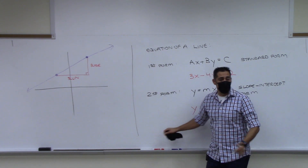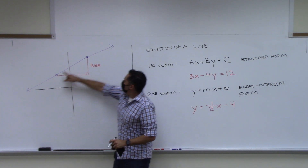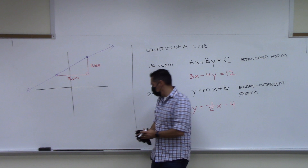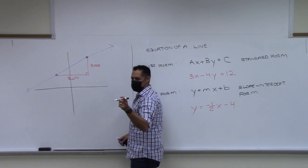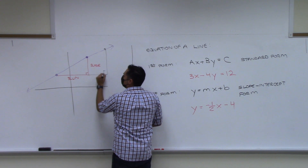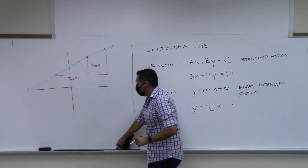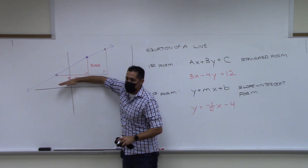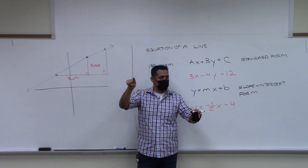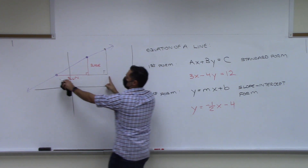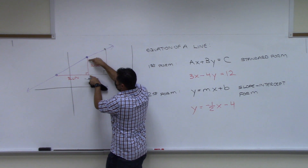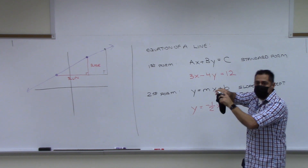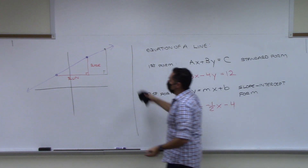If I take a different point on the line, I'll have a different rise and a different run — a different triangle. But no matter what two points I pick, if I take the ratio of rise divided by run, it will always be the same. Since it's constant for the entire line, we have a name for it: we call it the slope of the line. The slope is defined as rise over run.